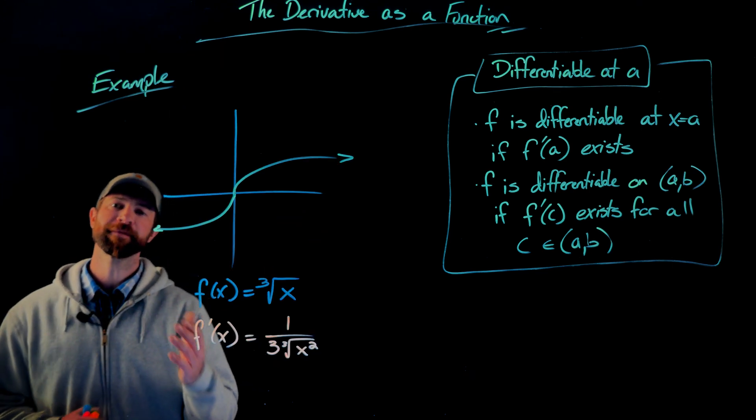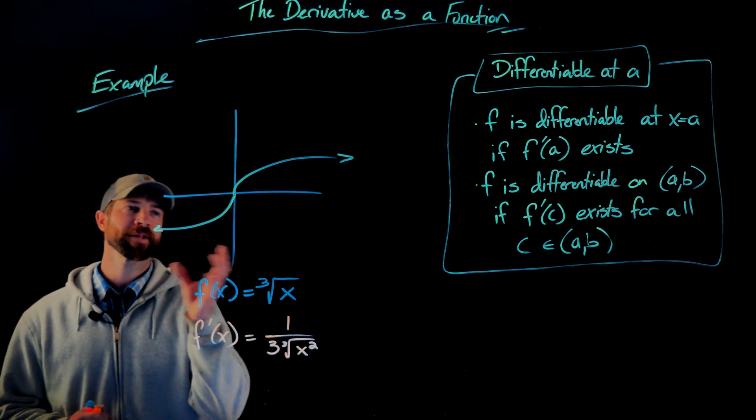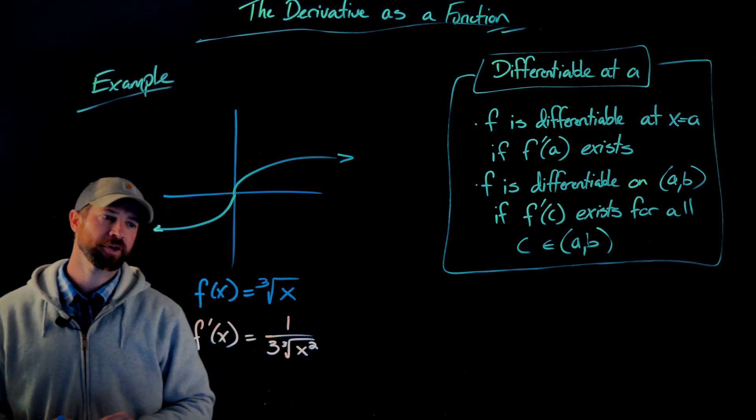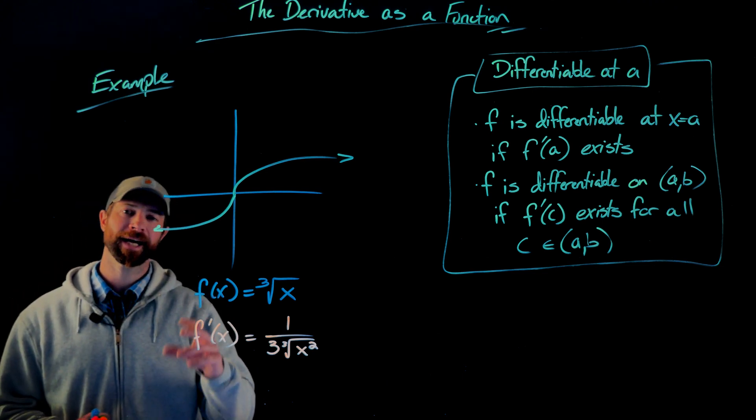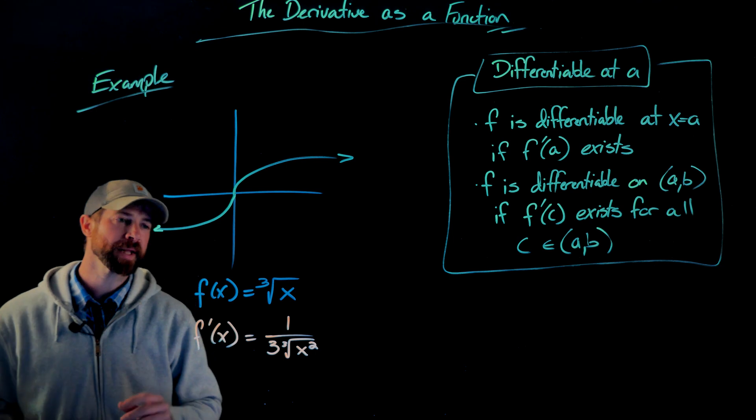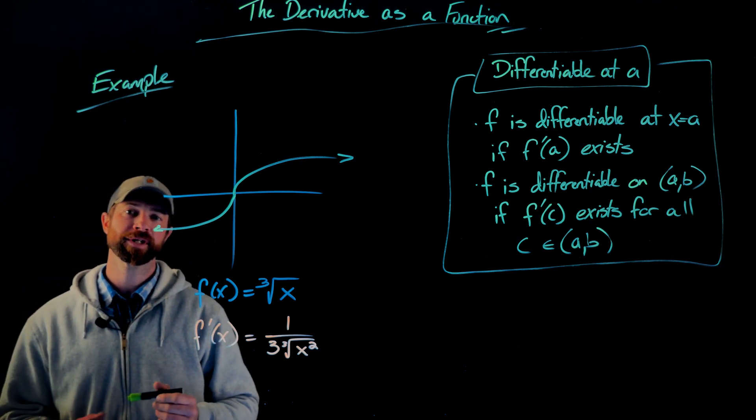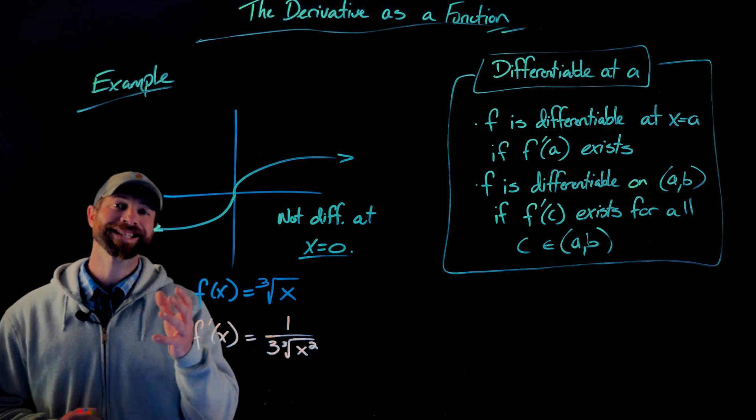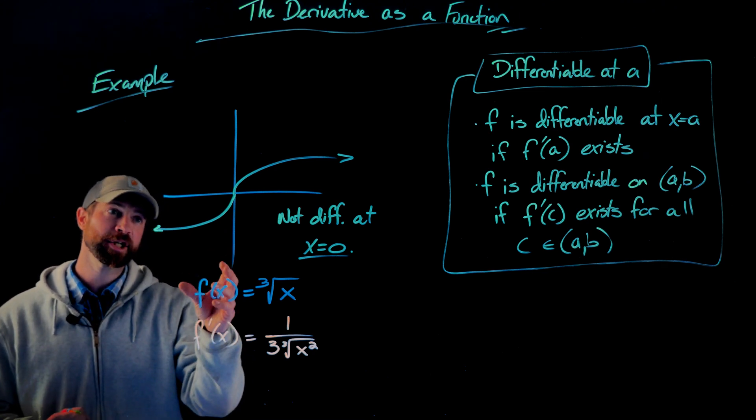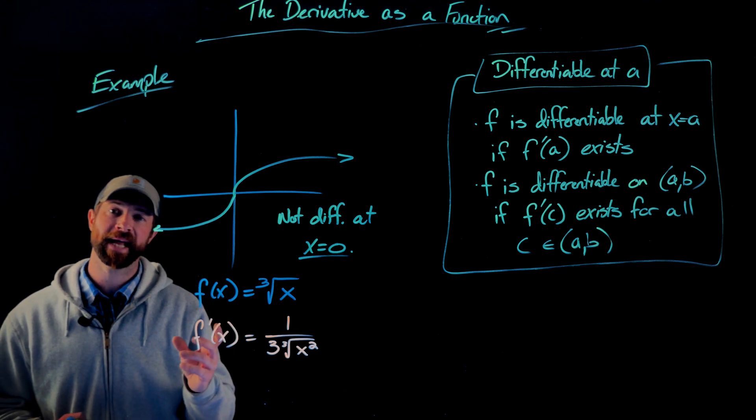And in this third and final graphical representation, we have the cube root of x here. And here is the derivative of the cube root of x is 1 over 3 times the cube root of x squared. This function is also not differentiable at x equals zero. This is probably the least obvious of the examples so far because it's continuous and it meets up, we see, somewhat naturally.